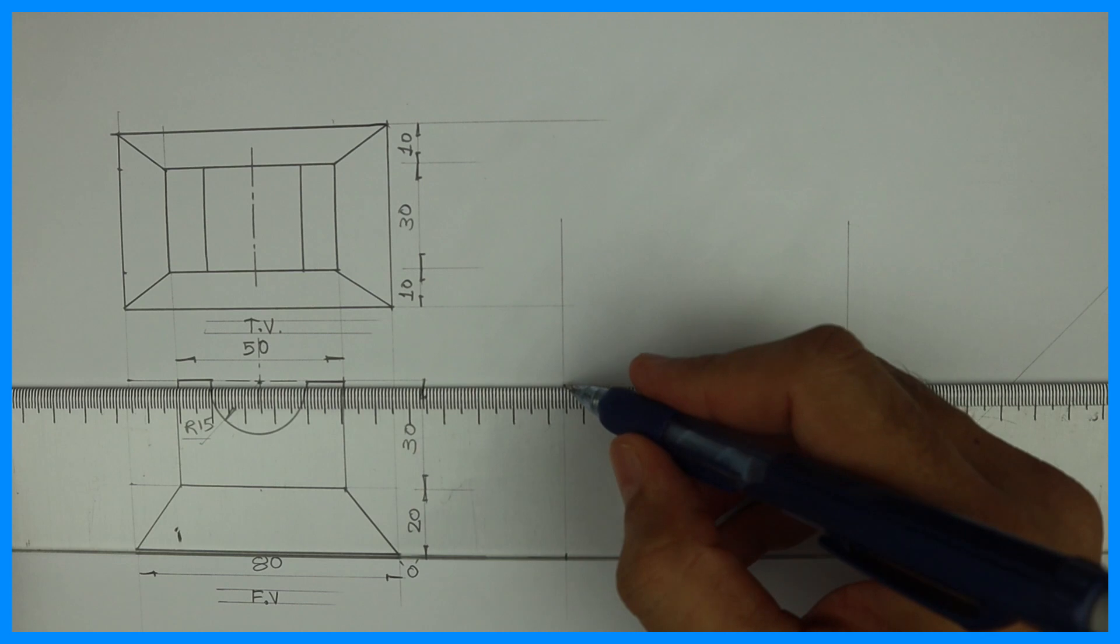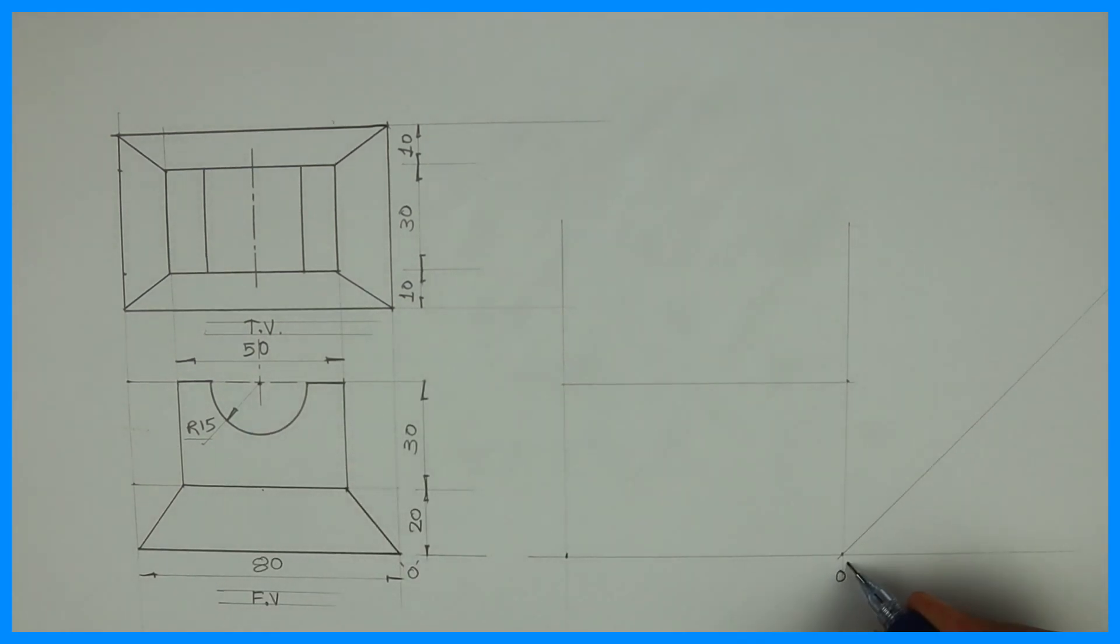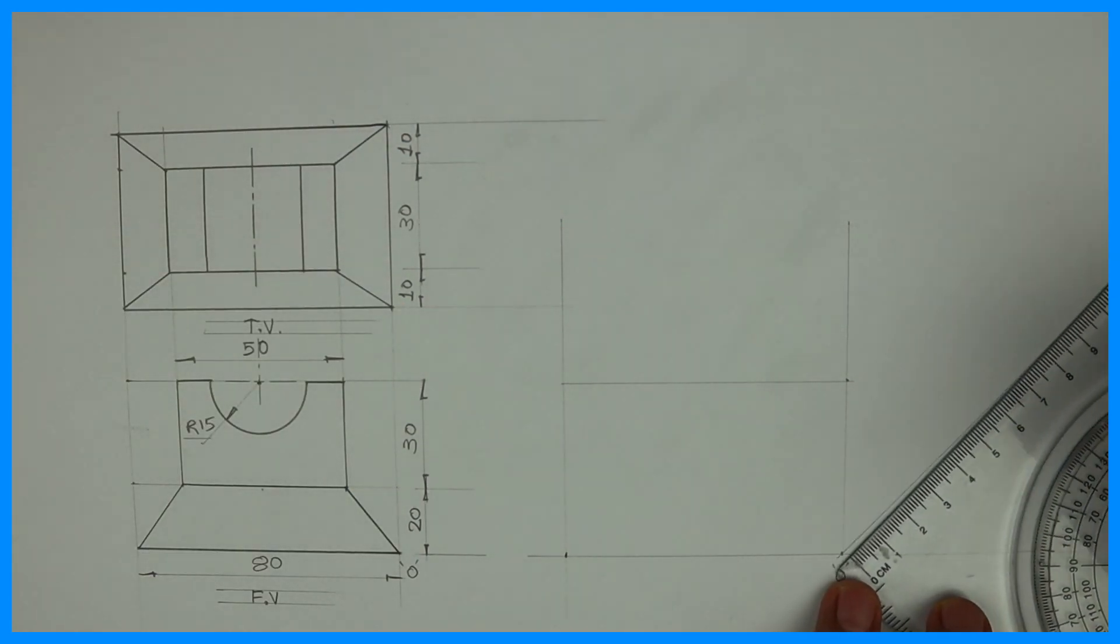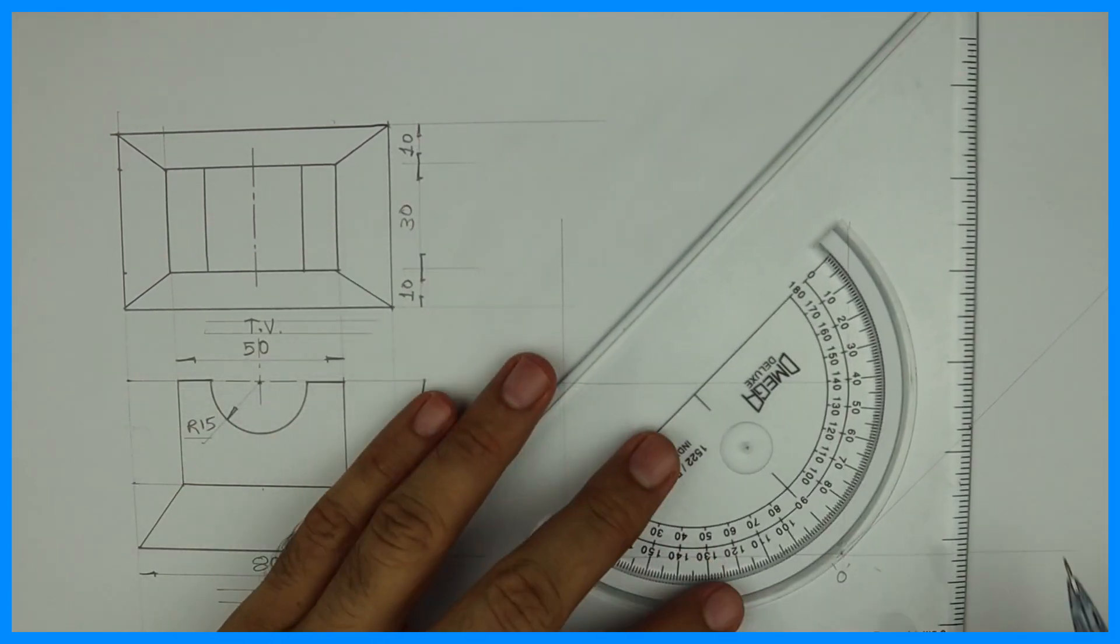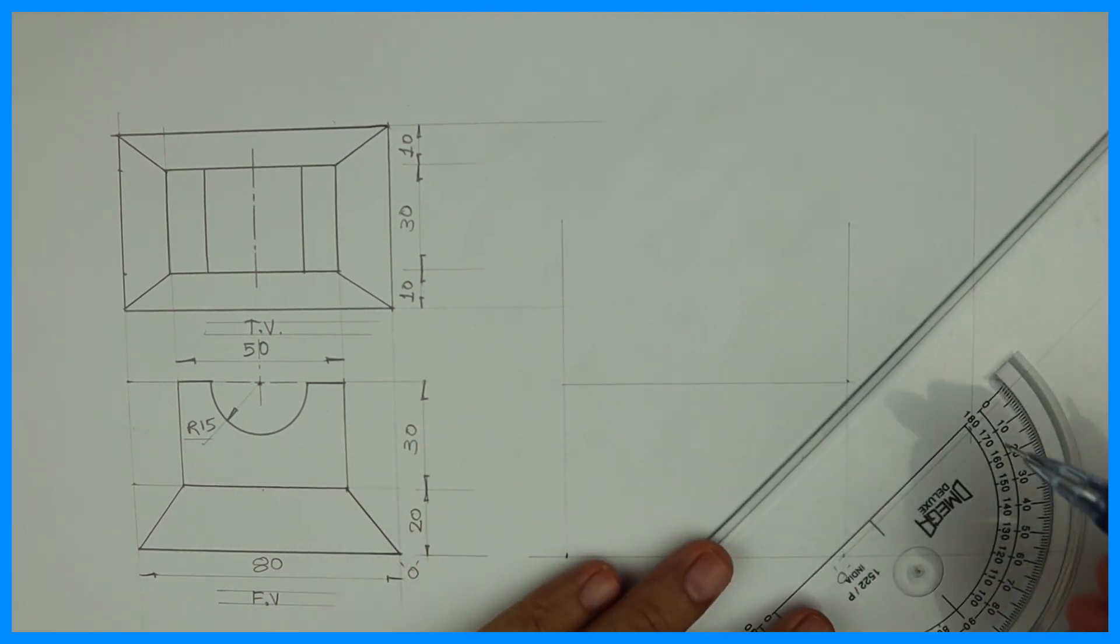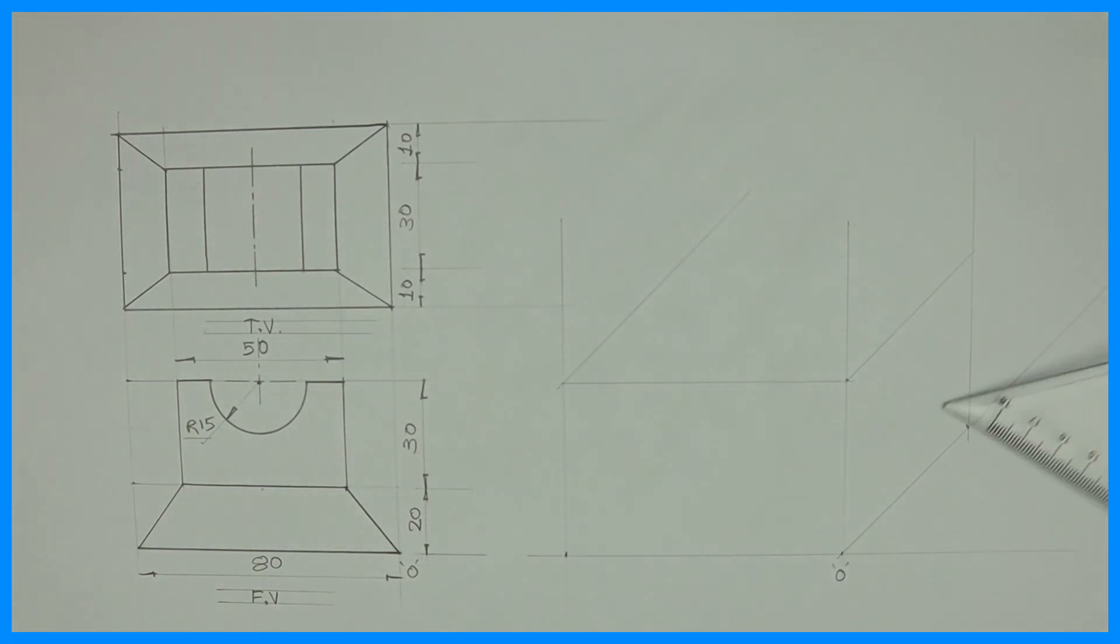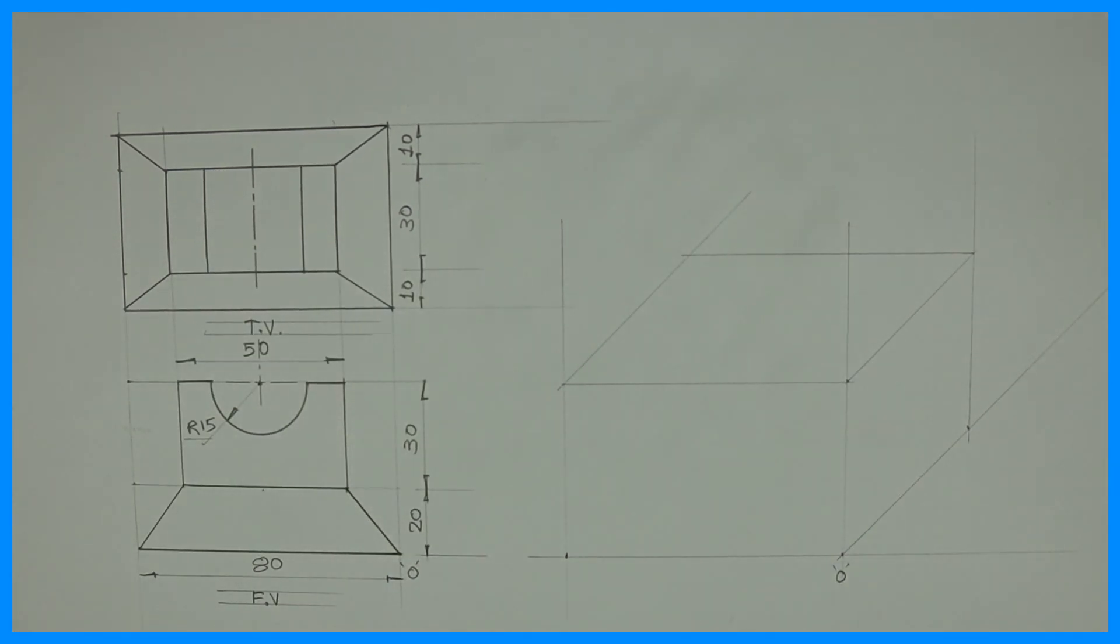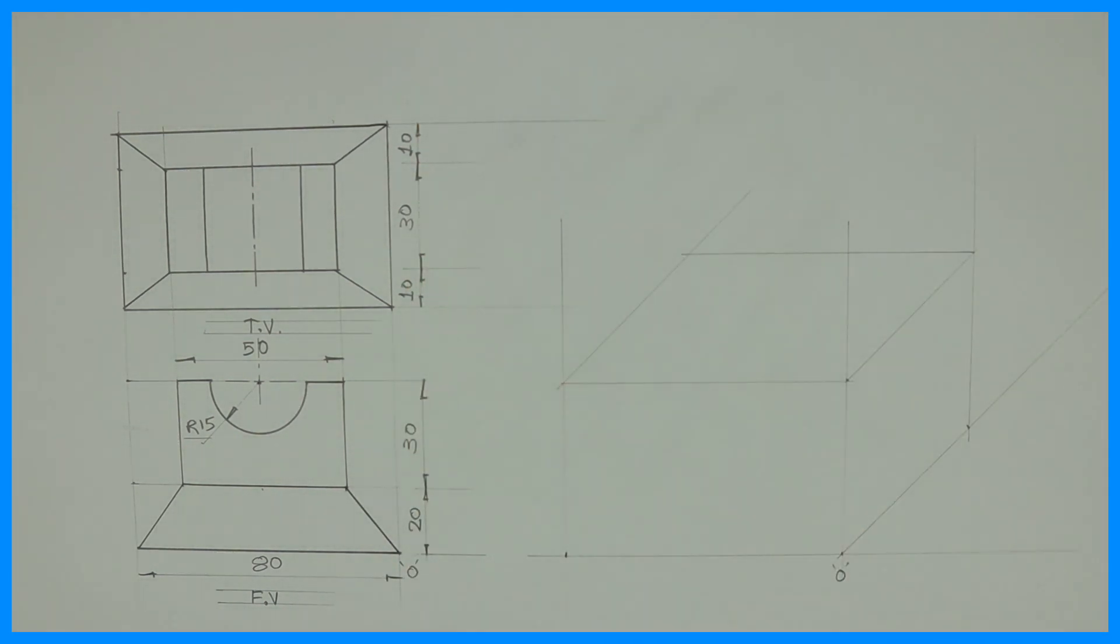Remember one thing, I have taken receding angle 45 degree. 80, 50. Width is how much? 50. Origin is here. Width is 50. So first we will draw this box. So we are done with layout. 50, 50.